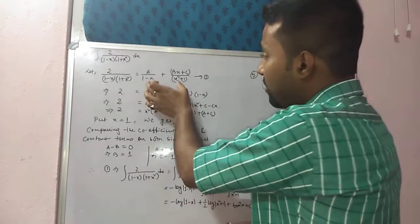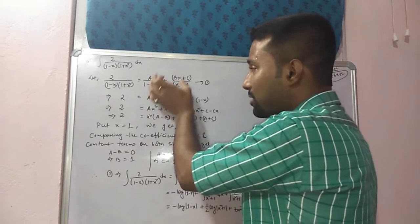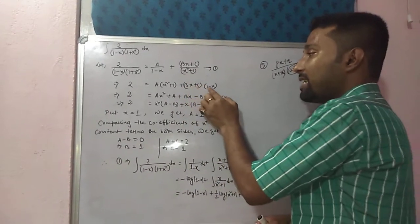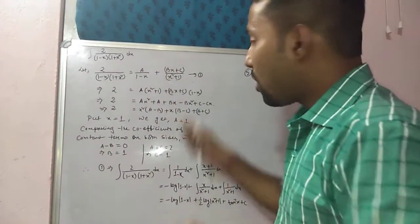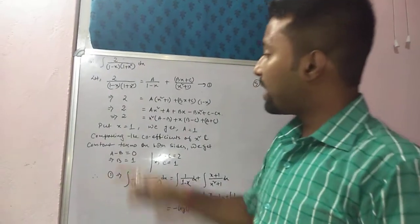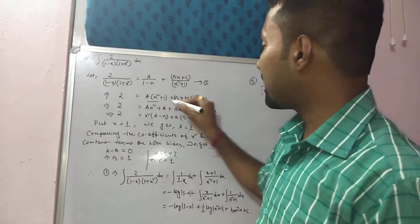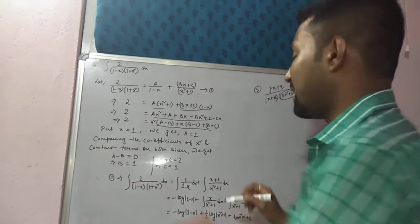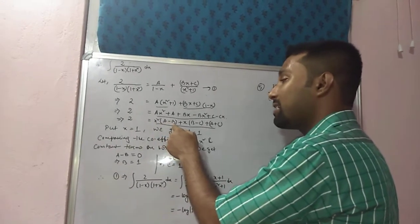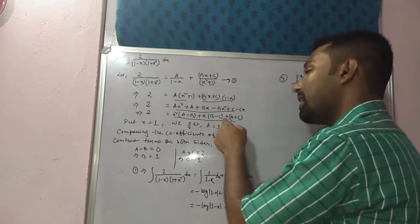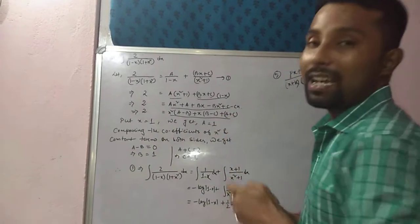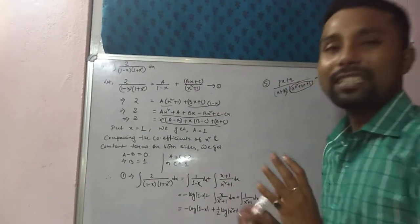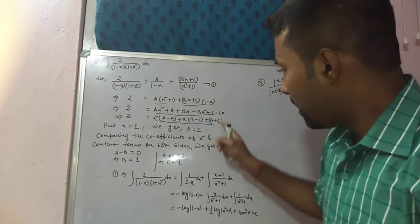Before that, you have to take LCM on the right-hand side. After taking LCM, I got a into (x square + 1) plus (bx + c) into (1 minus x), and the denominator will eliminate from both sides. Therefore we can write: 2 equals — after expanding and arranging in quadratic form — x square common gives (a minus b), x common gives (b minus c), and the constant part is (a plus c). Expressed in quadratic form to make it easier to find values of a, b, and c.